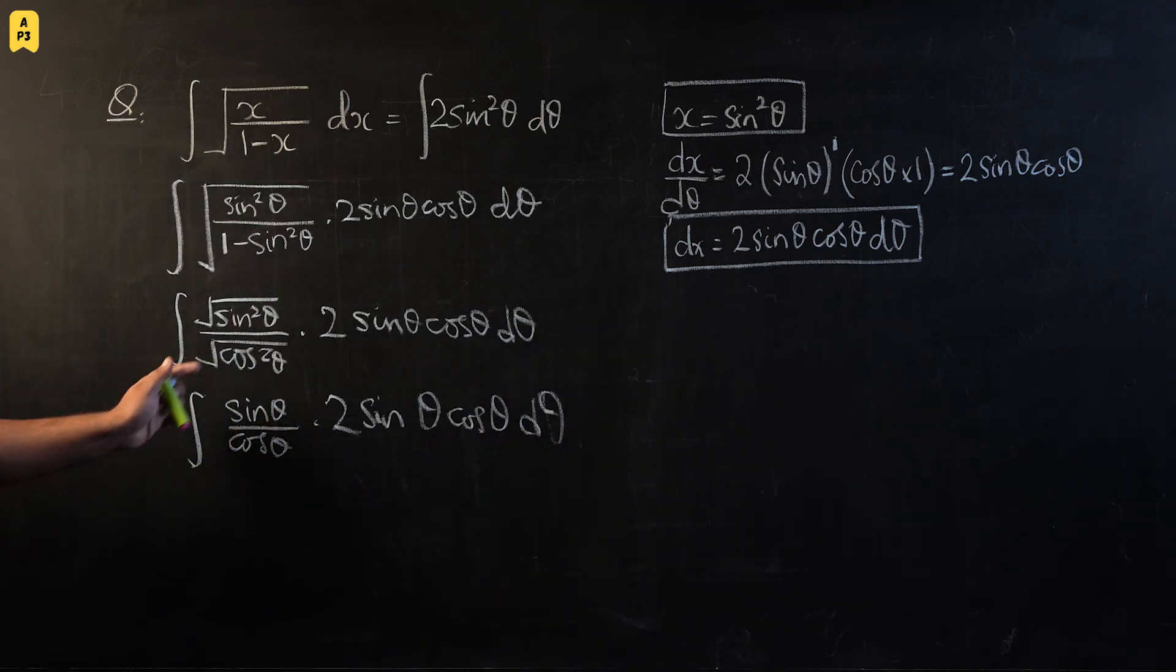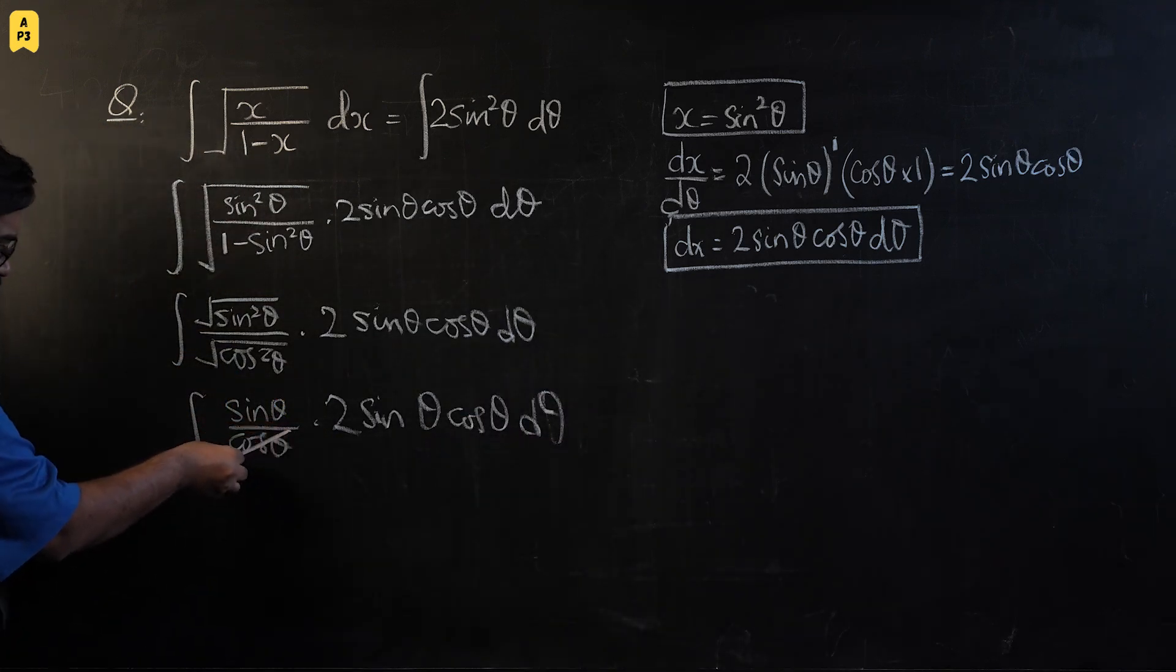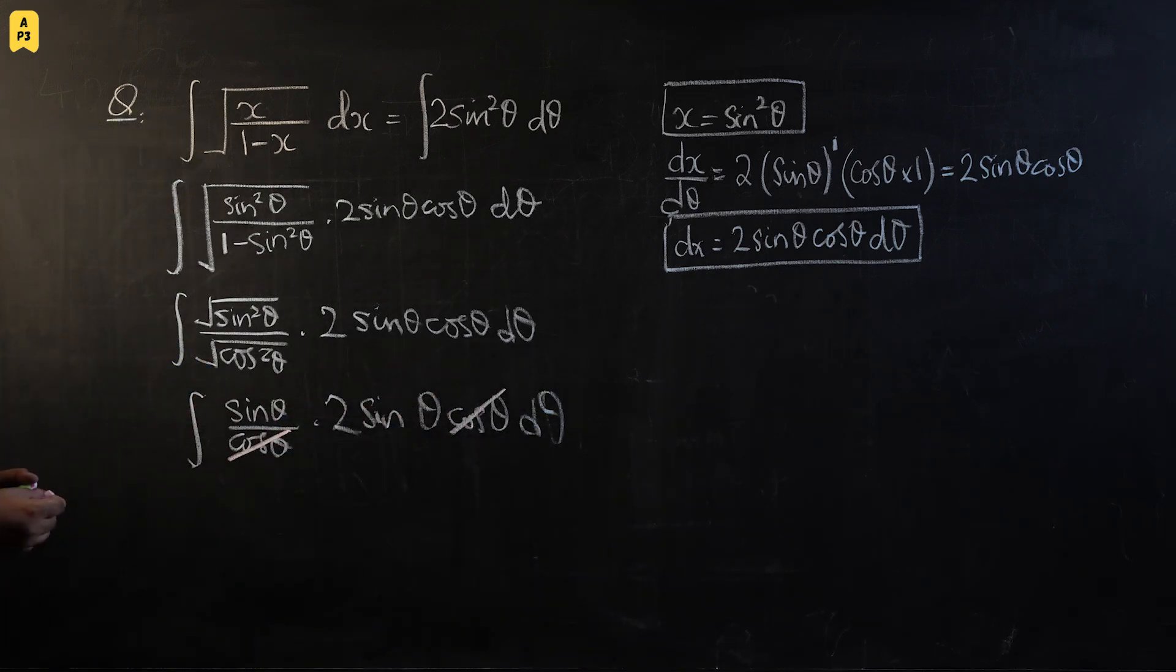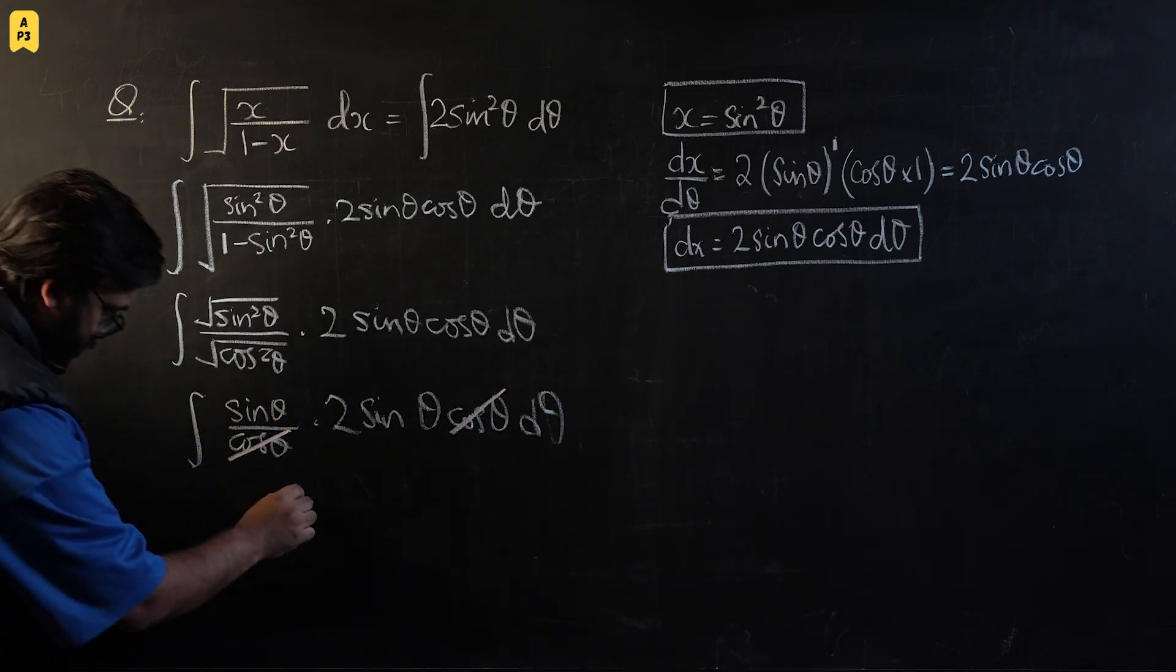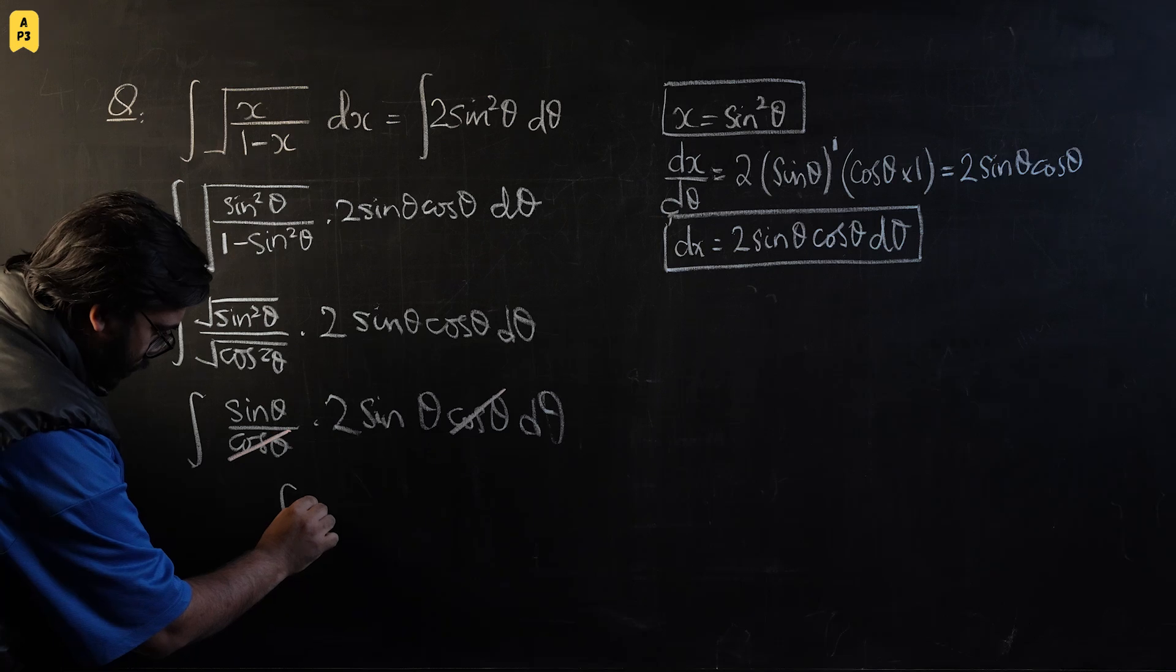All right, over here things have become very simple. Now this cosθ will cancel out with this cosθ and you're left with integral of 2sin²θ dθ.